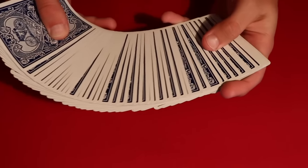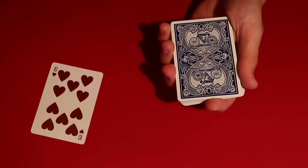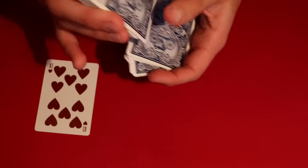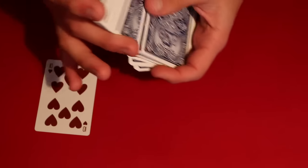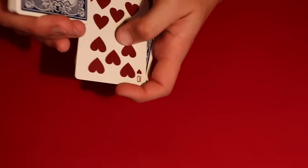So you go ahead and you have the spectator pick any card that they want to, and let's say in this case it's a 10 of hearts. So you go ahead and what you do is tell your spectator to tell you when to stop, and all you're doing is a regular overhand shuffle. And the moment they tell you to stop, I'll leave the card right here.